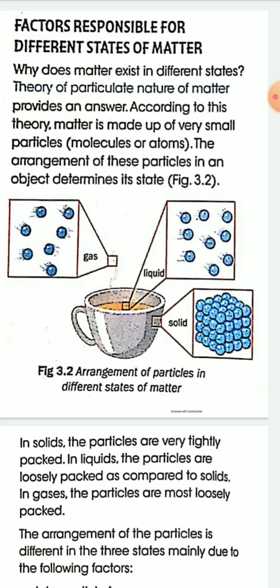According to this theory, matter is made up of very small particles called atoms and molecules, and the arrangement of these particles in an object determines its state. As you can see in figure 3.2, the particles in gas are far apart from each other, but in the case of solid they are very closely attached. So the arrangement of particles is different in gases, liquids, and solids.